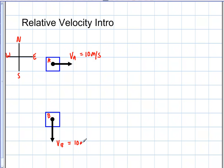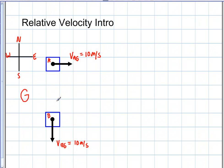Everything you've seen up to this point gives the velocity of an object — velocity of A or velocity of B — but what it's really implying is that there's a reference point. If an object is on the ground, that's its reference point. So we have the ground, labeled G. These cars are on the ground, so this is the velocity of A with respect to G, and the velocity of B with respect to the ground. That's always implied.